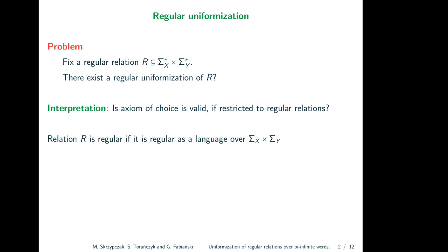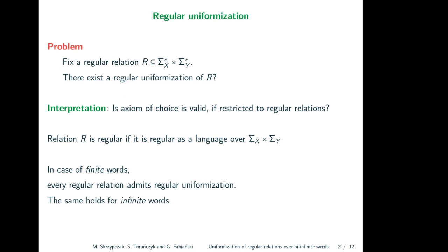What is known about regular uniformizations? For finite words, every regular relation admits a regular uniformization. This is easy to prove: for every input you can choose the lexicographically smallest matching output, and being lexicographically minimum is easily expressed in MSO logic. The analogous statement is true for infinite words — any regular language of infinite words has a regular uniformization — though the proof requires Büchi automata since lexicographically minimal words may not exist.